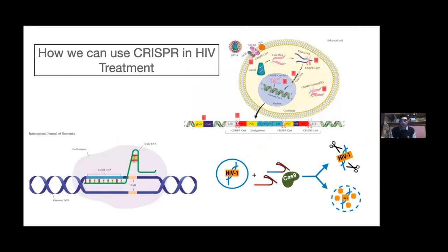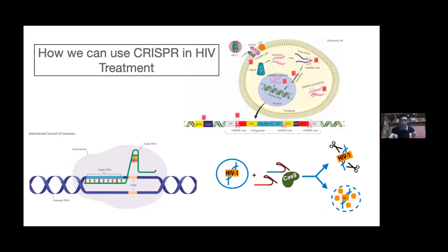How can we use CRISPR in HIV treatment? We can design guide RNA in the laboratory targeting specific genes of HIV, such as reverse transcriptase 1, reverse transcriptase 2, or the GP41 gene, and put the complementary sequence on Cas9 and deliver it to the cell. So when Cas9 detects HIV and finds a matching sequence, it will cut those sequences and the infection will stop.